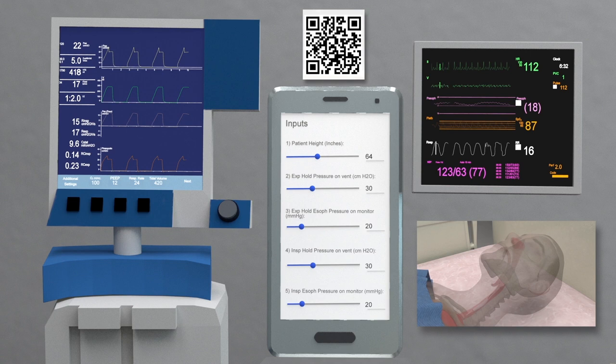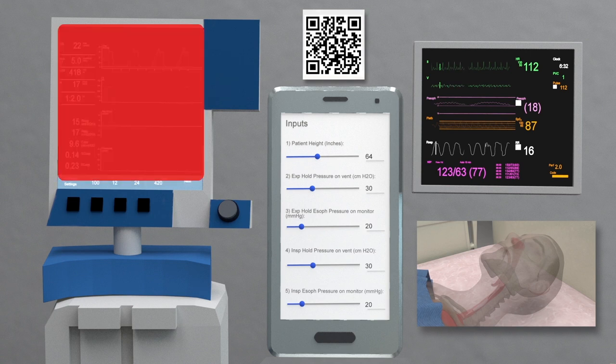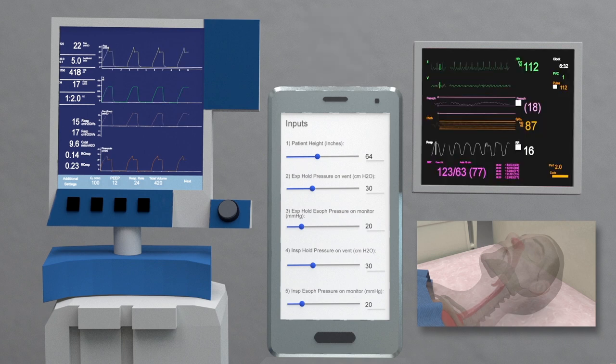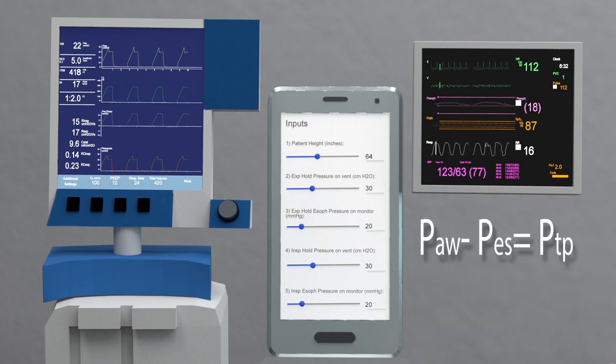This calculator helps with unit conversion since ventilator pressure is measured in centimeters of water whereas esophageal pressure on the bedside monitor is transduced in millimeters of mercury and it will calculate transpulmonary pressure by subtracting pressure measured by the esophageal balloon from that at the airway opening.